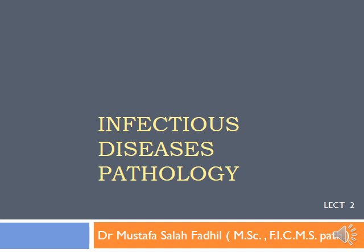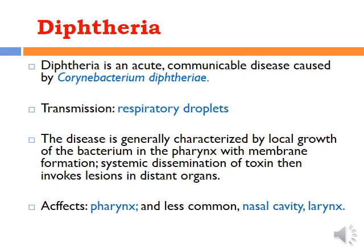In the second lecture of infectious disease pathology, we continue with bacterial infections. Another example is diphtheria — an acute transmissible infection of the upper respiratory tract, usually caused by Corynebacterium diphtheriae. Transmission is by respiratory droplets. The disease is characteristically defined by proliferation of the microorganisms inside the pharynx with the development of a pseudomembrane.